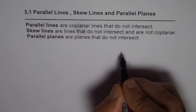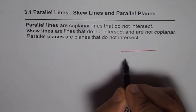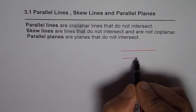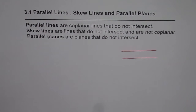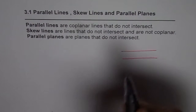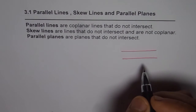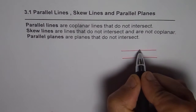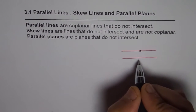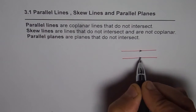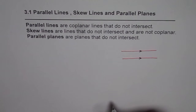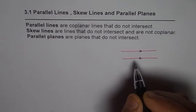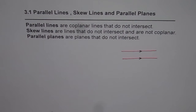For parallel lines, try to draw horizontal parallel lines. At times they may not look perfectly parallel, so what we do is mark arrows like this. If I mark one set of arrows, it means these two lines are parallel.